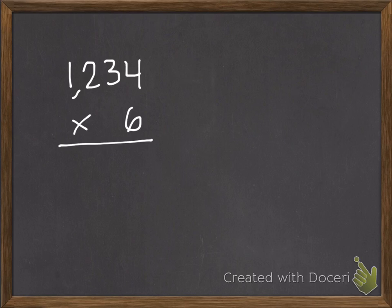So we start with our ones. We always start with our ones. So six times four is twenty-four. Put my twenty as two tens, my four in the ones. Six times three tens is eighteen. Plus I have two. So eighteen plus two is twenty.